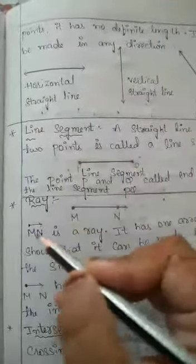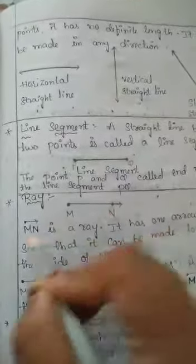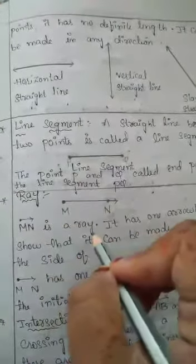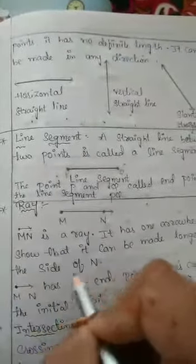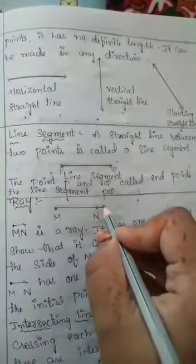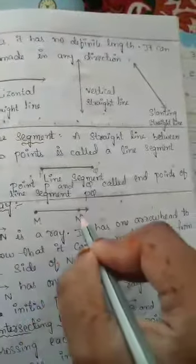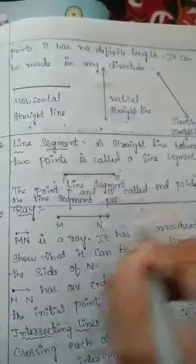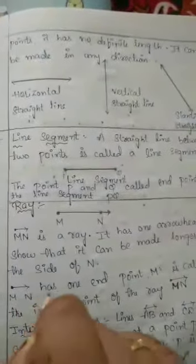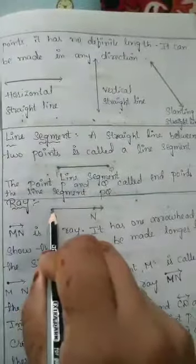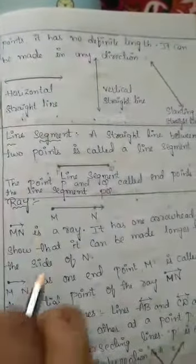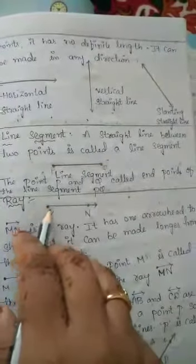Next is ray. MN is a ray. It has one arrow head to show that it can be made longer from the side of N. MN has one end point M, which is called the initial point.